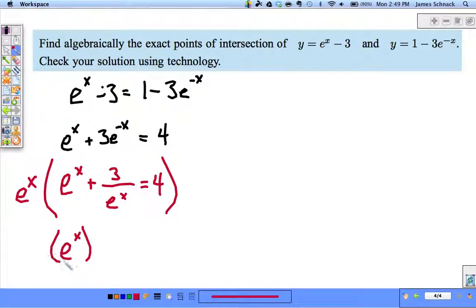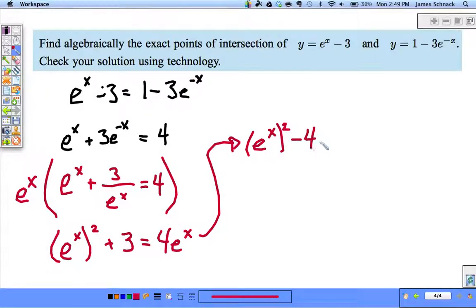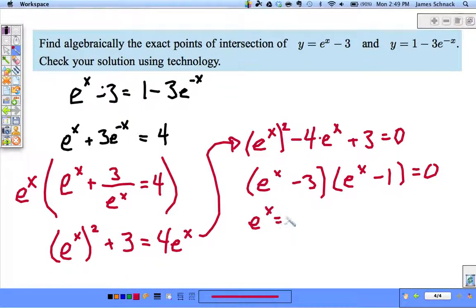Now we have (e^x)^2 + 3 = 4e^x. This looks like a quadratic, and that's because it is. (e^x)^2 - 4e^x + 3 = 0. This is factorable: (e^x - 3)(e^x - 1) = 0.